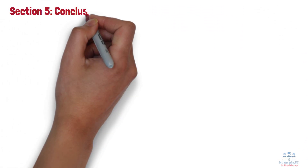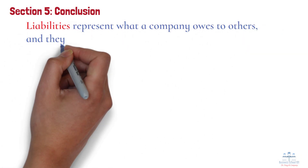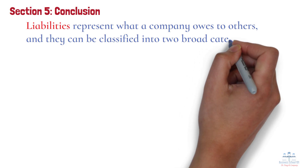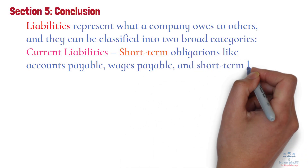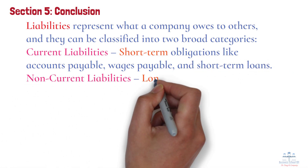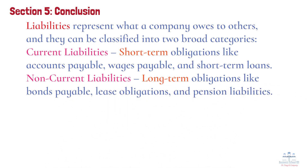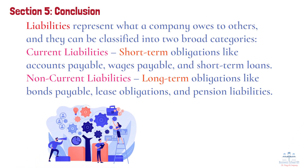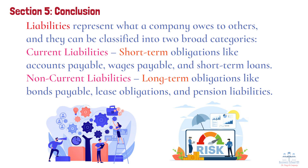Section 5: Conclusion. In summary, liabilities represent what a company owes to others, and they can be classified into two broad categories. Current liabilities include short-term obligations like accounts payable, wages payable, and short-term loans. Non-current liabilities include long-term obligations like bonds payable, lease obligations, and pension liabilities. Liabilities are necessary for business operations, but managing them effectively is crucial for maintaining liquidity, profitability, and solvency. Whether you are running a business, analyzing a company, or investing in stocks, understanding liabilities helps you assess financial risk and stability.